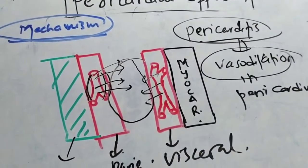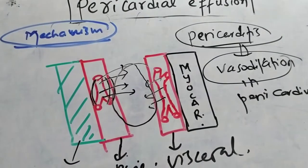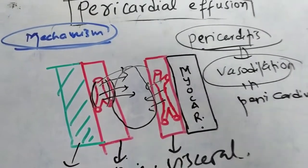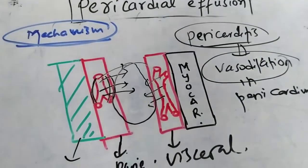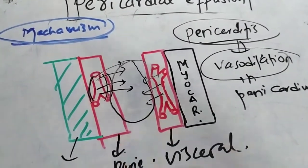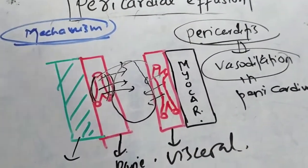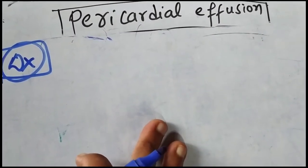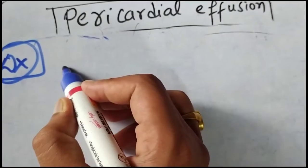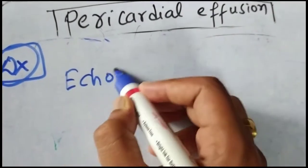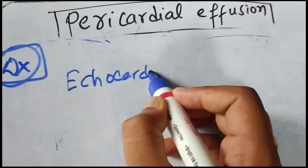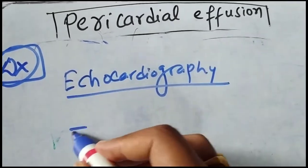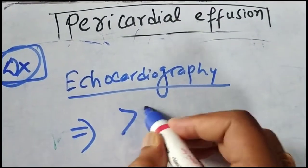The detailed mechanism has already been discussed in the lecture on acute pericarditis, so you can consult that. Now let's talk about how to diagnose pericardial effusion. The first investigation is echocardiography, which is useful when the fluid amount is greater than 50 ml.